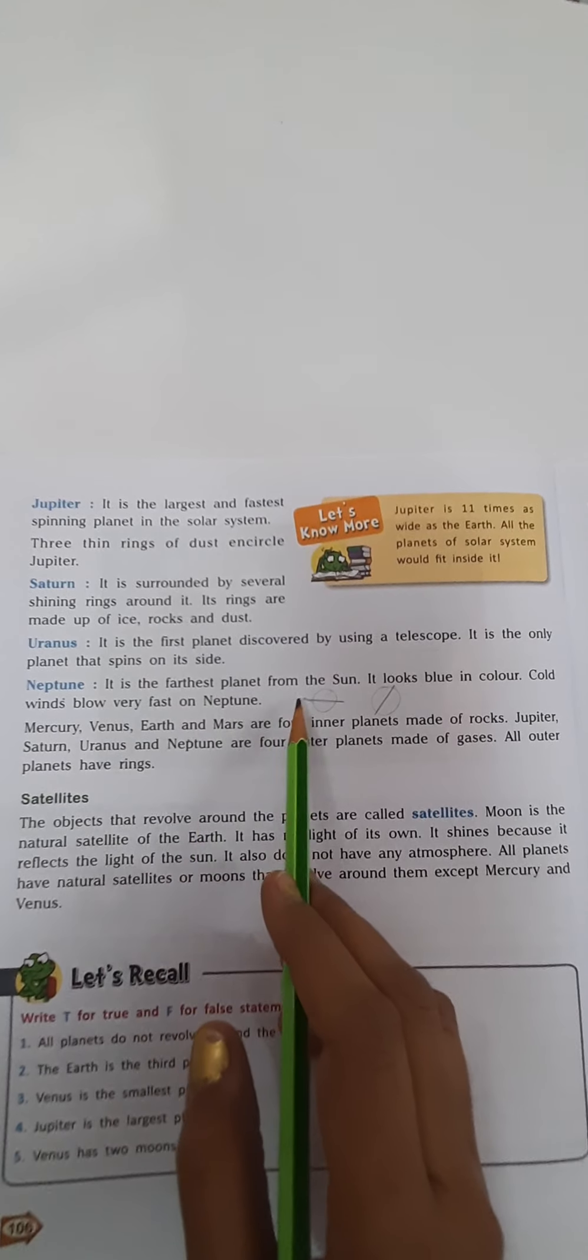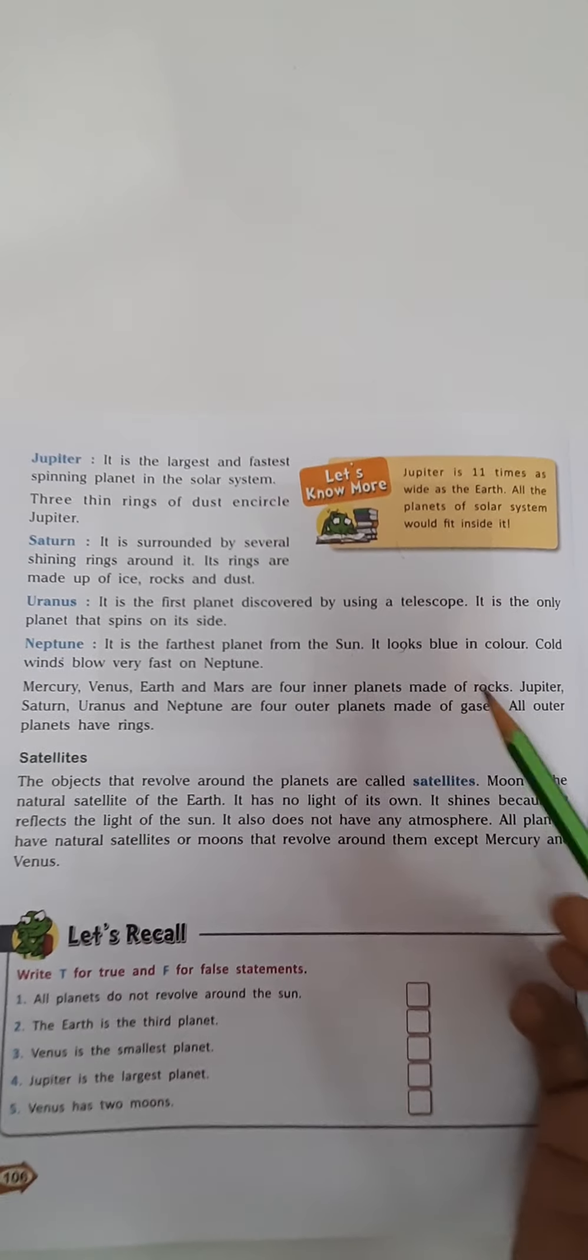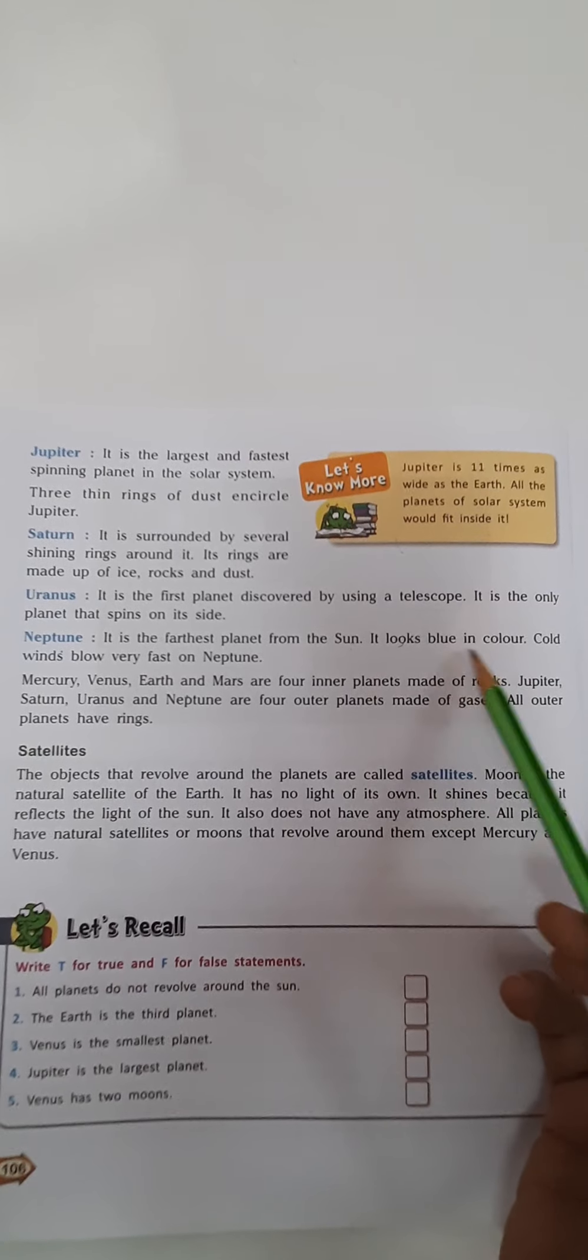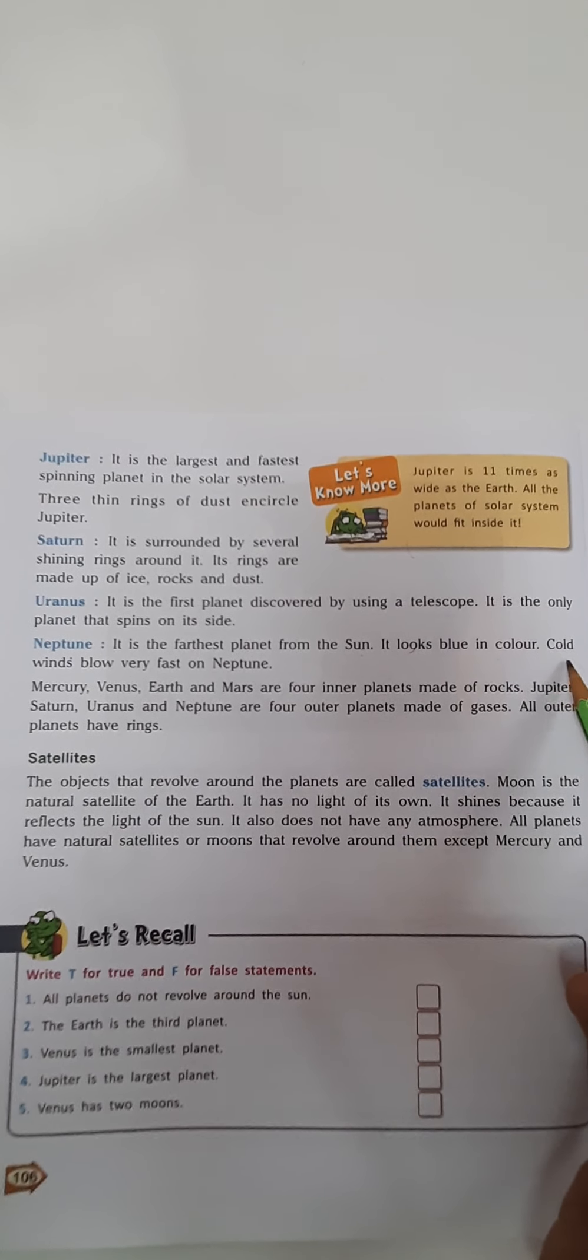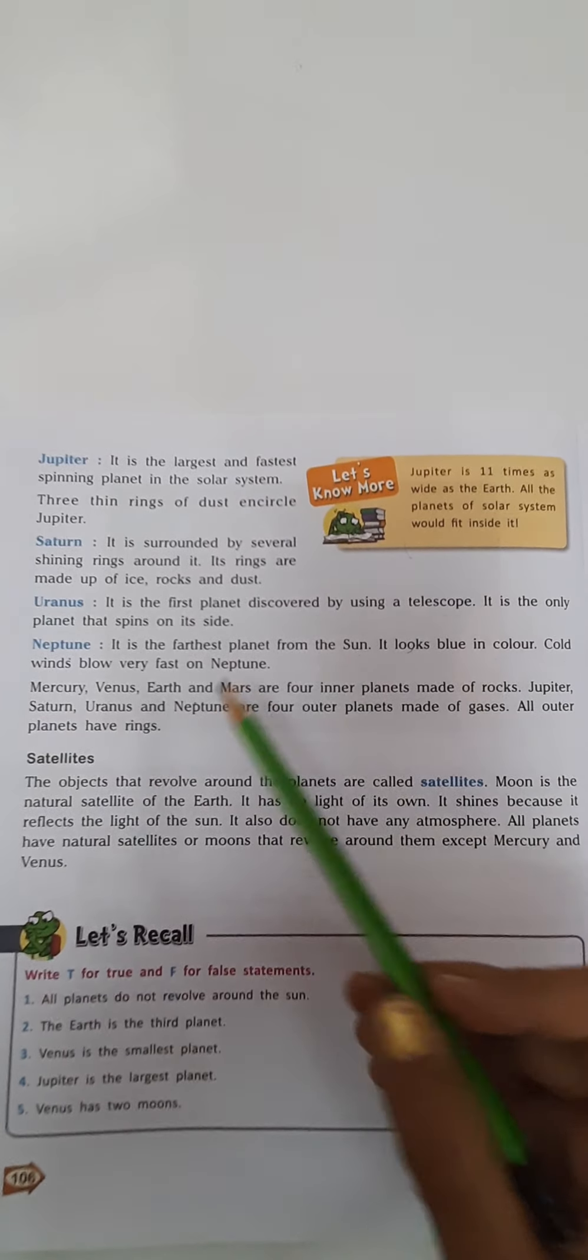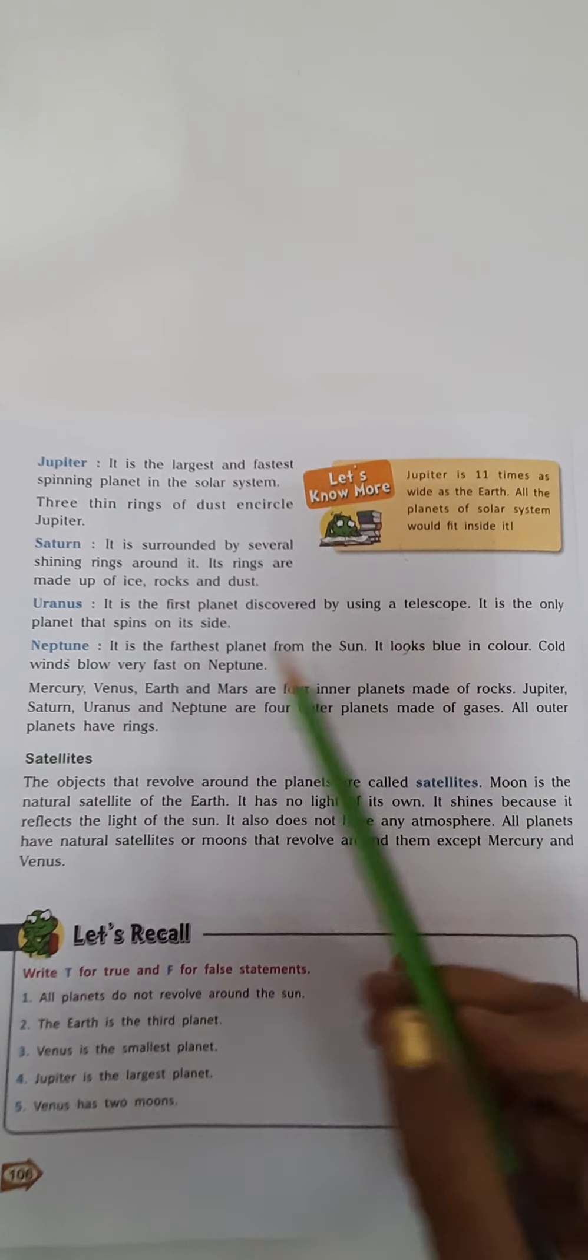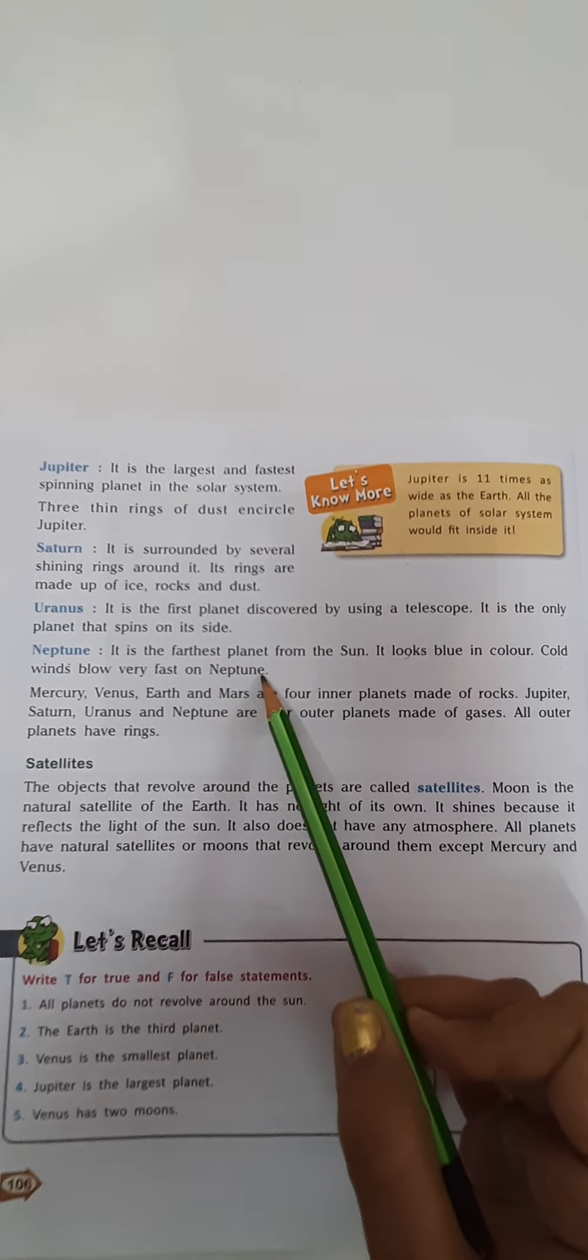Now next is Neptune. It is the farthest planet from the Sun. It looks blue in color and it is very cold because it is very far. So it is said that cold winds blow very fast on Neptune.